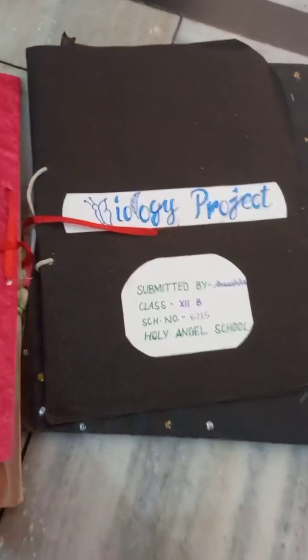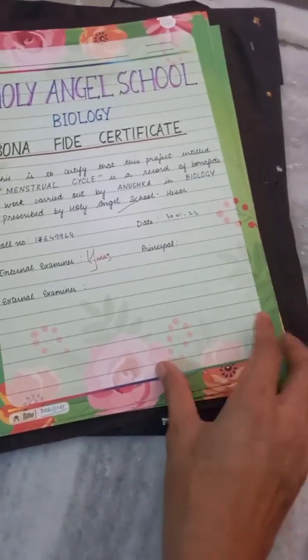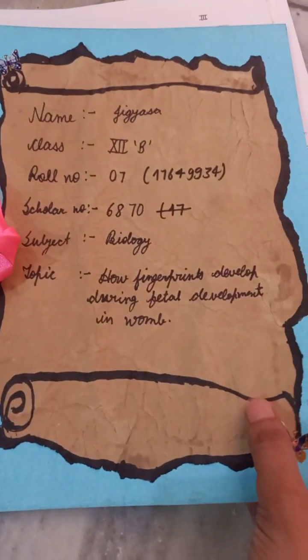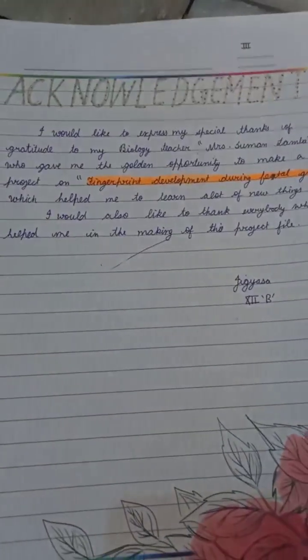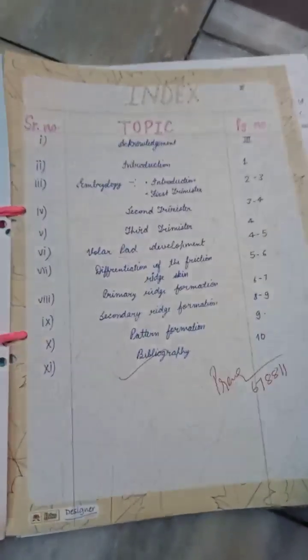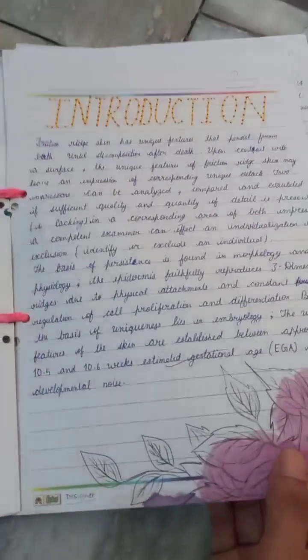We can make topics which are new. Usually people try to make projects on DNA fingerprinting, cancer, and AIDS, so I'm suggesting a few new topics. This one is related to the menstrual cycle — kind of an awareness topic — again related to Unit One. Another new topic is related to how fingerprints develop during fetal development, and this was a warm and highly appreciable project made by a student of Grade 12.